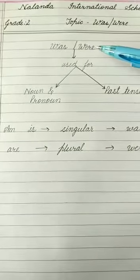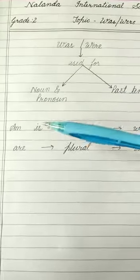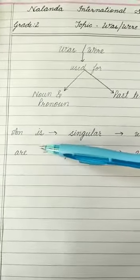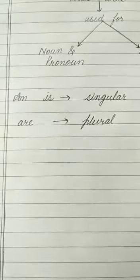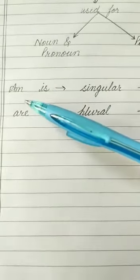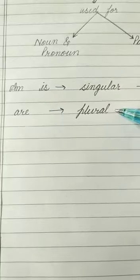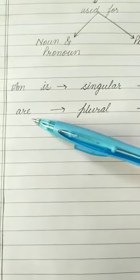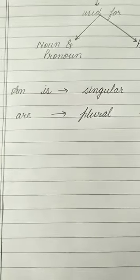Children, before starting with 'was' and 'were', let's revise a few points of 'is/am/are' that we have already covered. As you know, we use 'am' and 'is' with a singular noun or pronoun — that is, whenever we talk about one person or thing (ek vachan), we use 'am' or 'is'. And where we talk about plural (bahuvachan), we use 'are'. But these three are used in present tense, that is, when the action is happening right now.